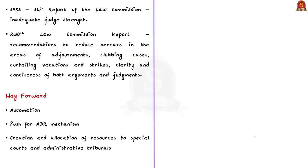There are already two Law Commission reports on this matter. In 1958, the 14th Report of the Law Commission dealt with delay and arrears, identifying inadequate strength of judges as the root cause. Most recently, the 230th Law Commission Report made certain suggestions to reduce arrears in areas of adjournment, clubbing cases, curtailing vacations and strikes. However, these recommendations have not yet been fully implemented by the government, which is why pendency has not started to reduce.